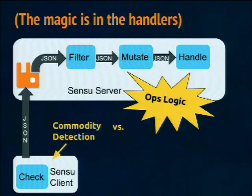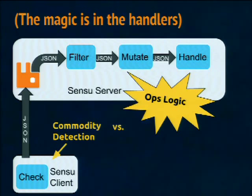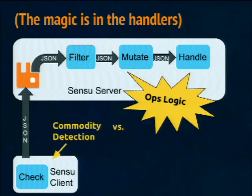The check runs on the Sensu client, sends a JSON result back through RabbitMQ, and there's an opportunity to filter out ones you don't want — maybe ones where you've explicitly said you're working on the server and know it's bad, or ones subdued for off hours. There's also an opportunity to mutate the JSON if it needs to be tweaked for the handler. Then it's sent to the handlers — scripts like we just wrote — to trigger the escalation paths. The escalation path might be start at CEO and go down, send to everyone at once, pick a random person, send to multiple services, or daytime to engineering and nighttime to ops.